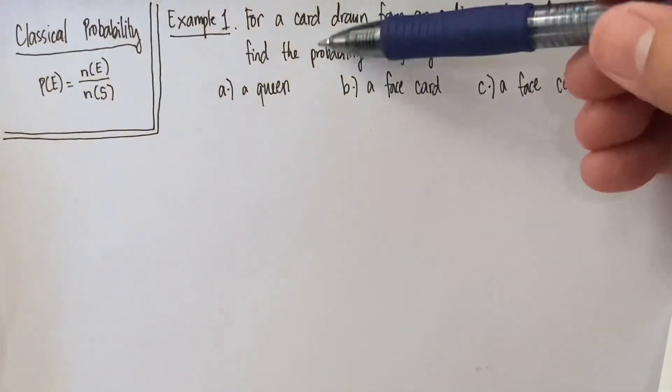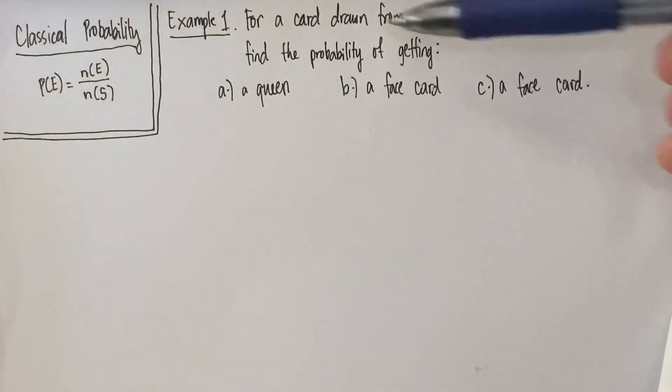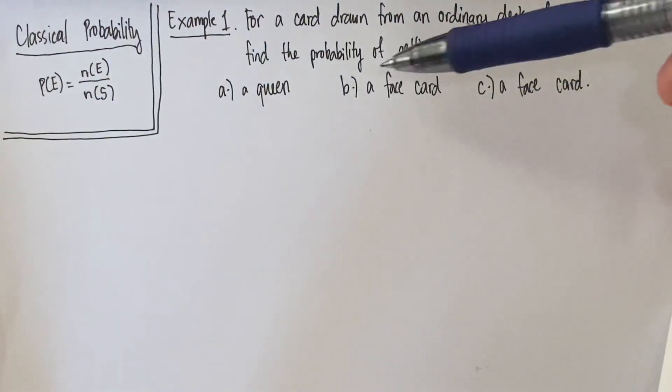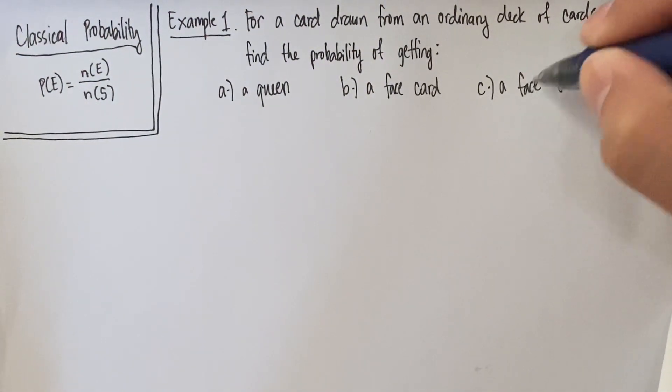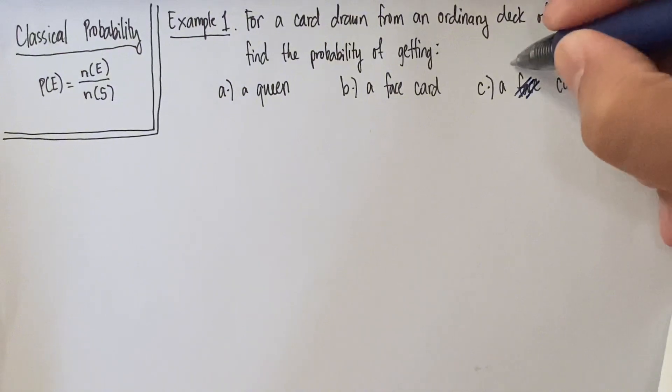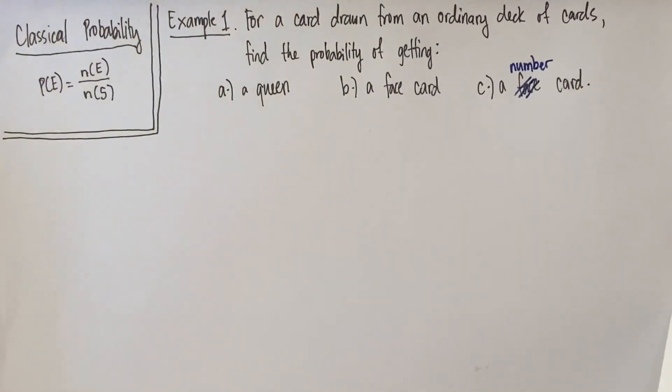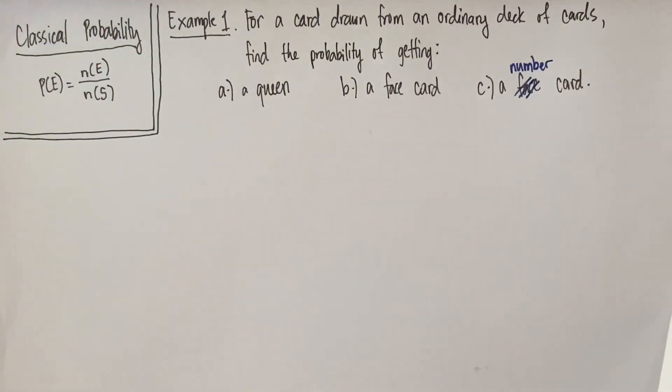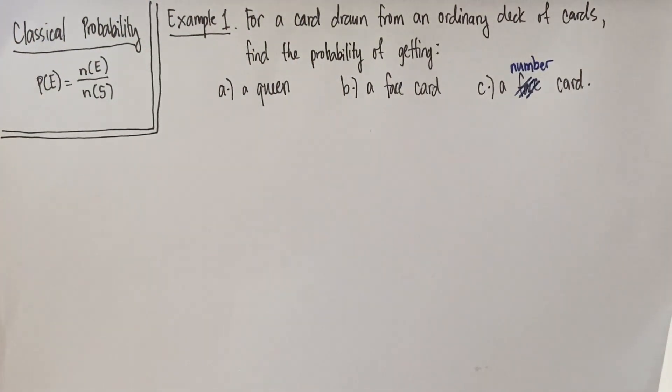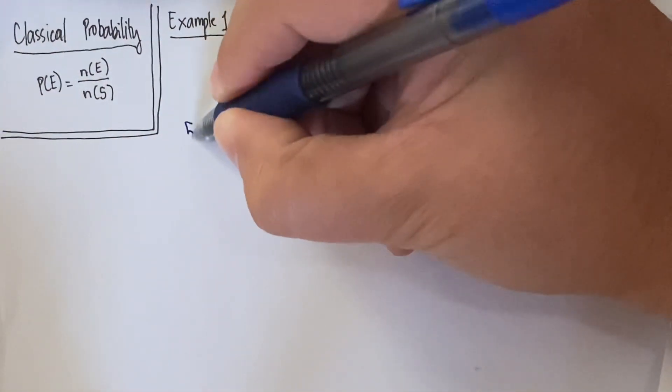So we want to answer this question. For a card drawn from an ordinary deck of cards, find the probability of getting: a) a queen, b) a face card, and c) - sorry, let's change this. I'm gonna make use of a number card here. I guess I didn't update that. For a card drawn from an ordinary deck of cards, remember when we say ordinary deck of cards, it is your simple or your usual deck of cards which has 52 cards all in all.